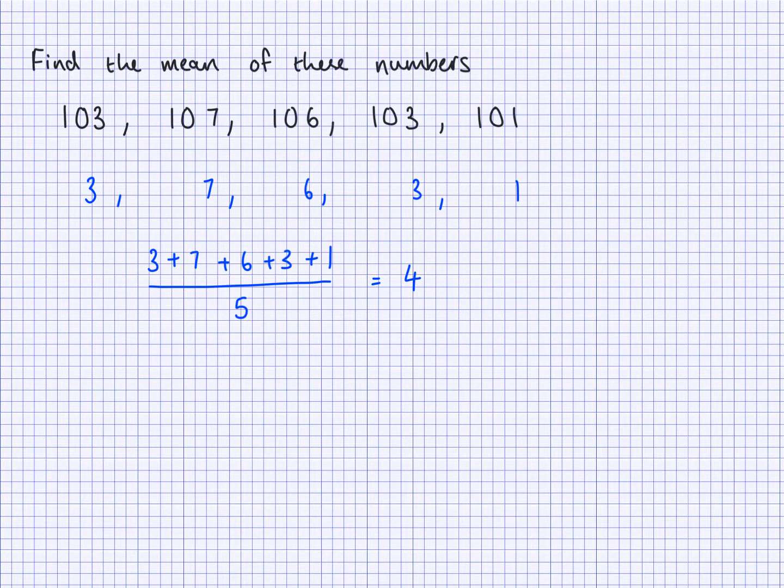So this is when we transform data to make it more manageable, make it easier to work out maybe the mean, median, or mode or other values like that. So what I do is I change all of the values in the same way. So I subtracted by 100 here and then I find the mean and then I reverse what I did. So I subtracted by 100 so I'm going to add 100 to this 4 and get 104 as the mean of my original set of data.